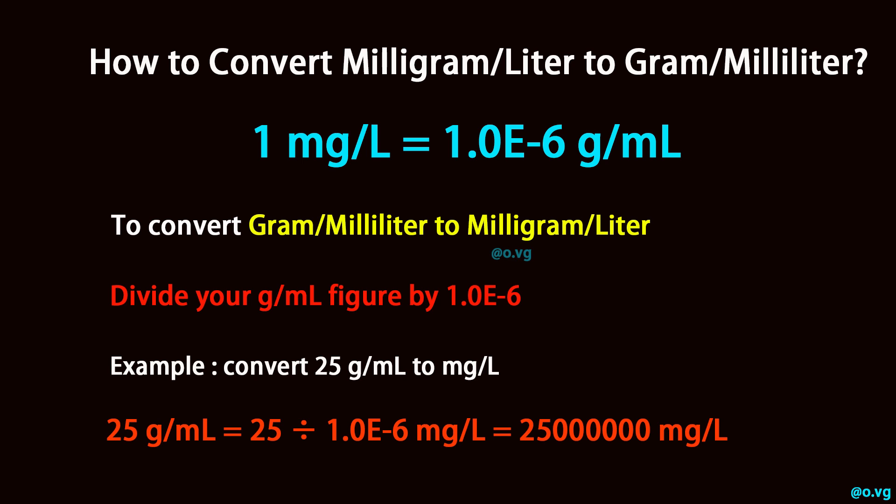Example: convert 25 gram per milliliter to milligram per liter. 25 gram per milliliter equals 25 divided by 1.0 times 10 to the power of negative 6 milligram per liter, which equals 25 million milligram per liter.